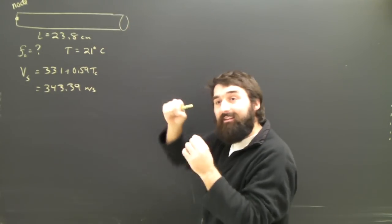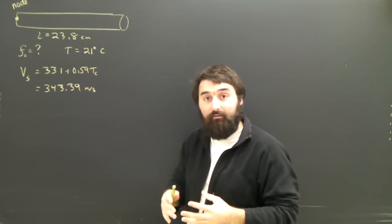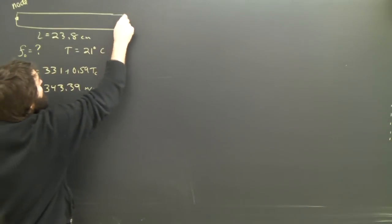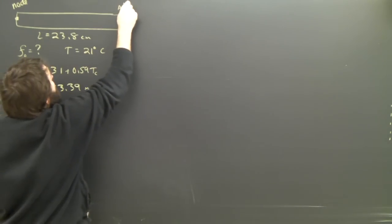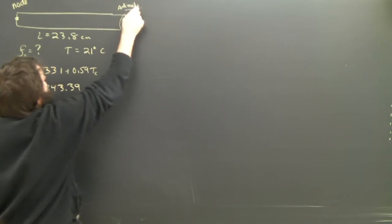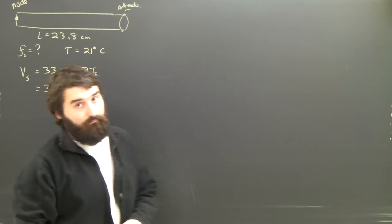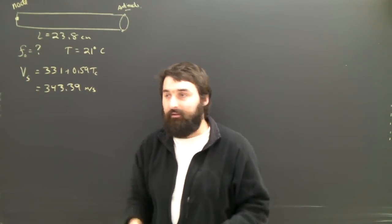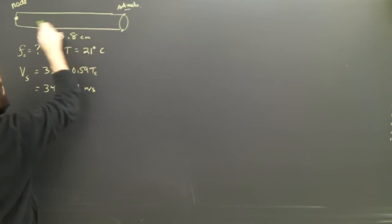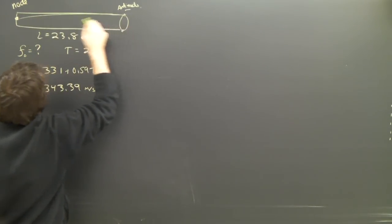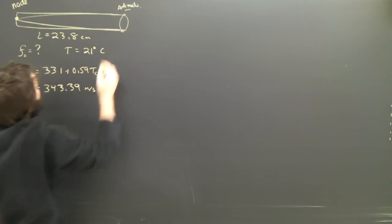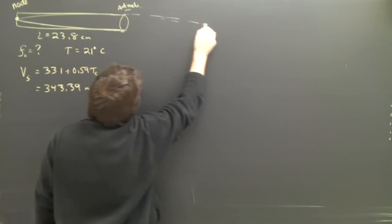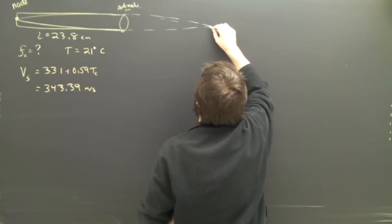But still, the open end can't have a node because it's free to wave, right? Although it's compressing and rarefying, which means that we're going to get an anti-node here. For the first harmonic, we need to have as few wavelengths as possible, as little waving as possible. So we have to go from a node to an anti-node. It's going to look like that. If I carried this on, eventually we'd get another node.